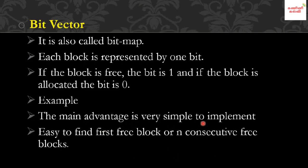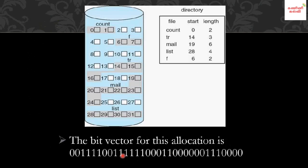The advantage of the bit vector method is that it is very simple and easy to implement — it uses just 0s and 1s. It is easy to find free blocks using this method.